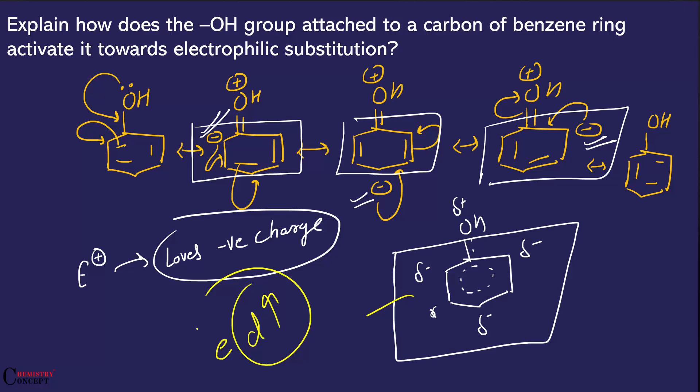Agar yeh OH nahi hota, yeh resonance nahi hota, benzene ki electron density nahi badhti. To book mein agar aapko likhna ho, to iska answer hoga: because of plus R effect. Is type ke resonance ko plus R effect kehte hain. Due to plus R effect, the OH increases electron density of the benzene ring, because of which the reactivity of benzene increases for electrophilic substitution reactions.